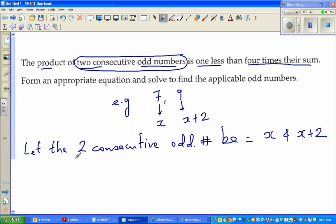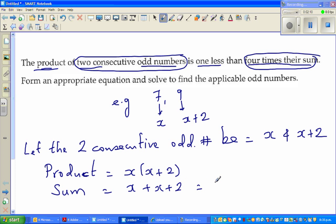Now let us read backwards. The product - how will you write the product? Product means multiplication, so the product would be x times (x plus 2). So this is your product. And then you've got four times the sum.